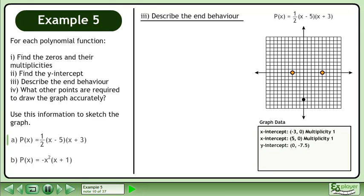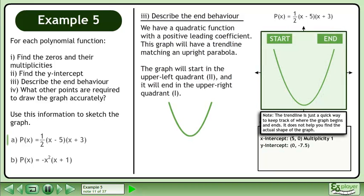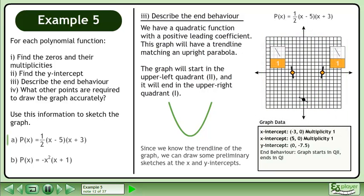Now we'll describe the end behavior. We have a quadratic function with a positive leading coefficient. This graph will have a trendline matching an upright parabola. The graph will start in the upper left quadrant and it will end in the upper right quadrant. Since we know the trendline of the graph, we can draw some preliminary sketches at the x and y-intercepts.